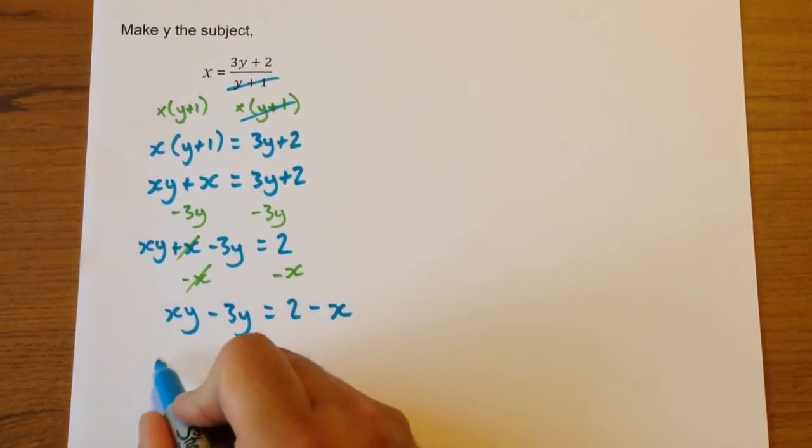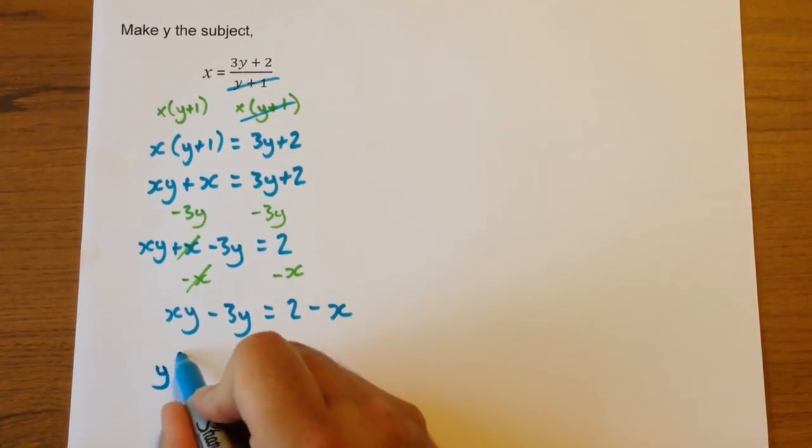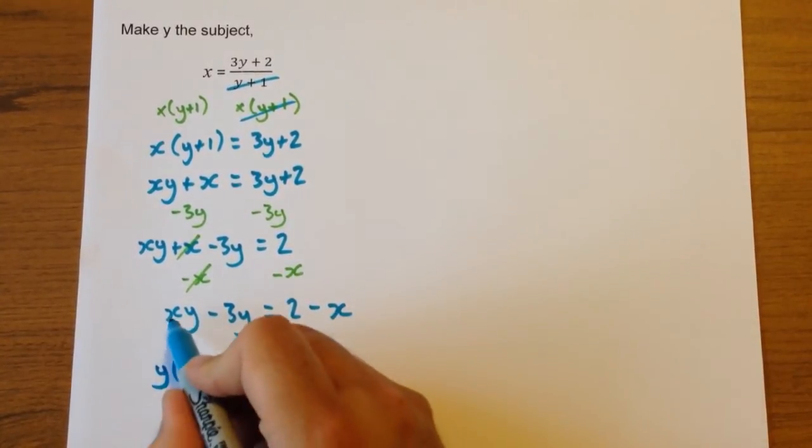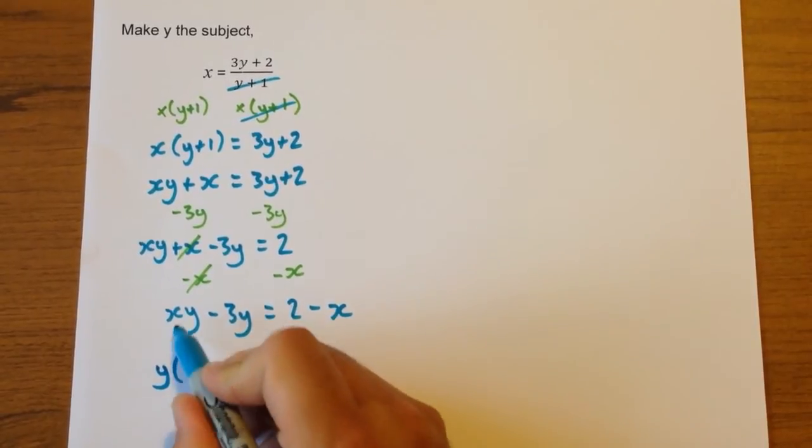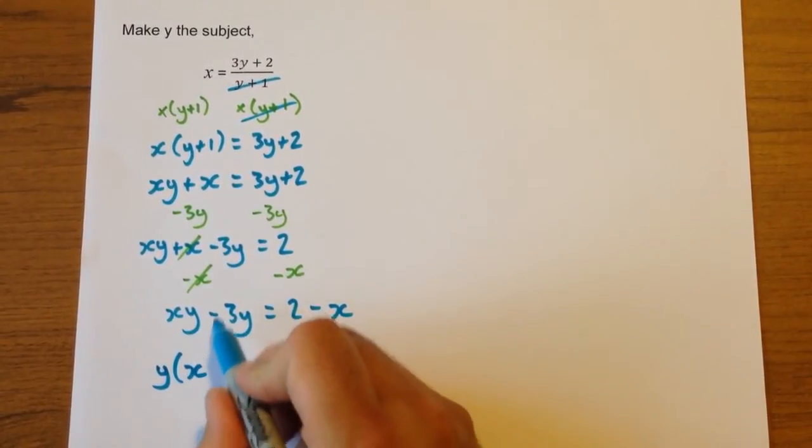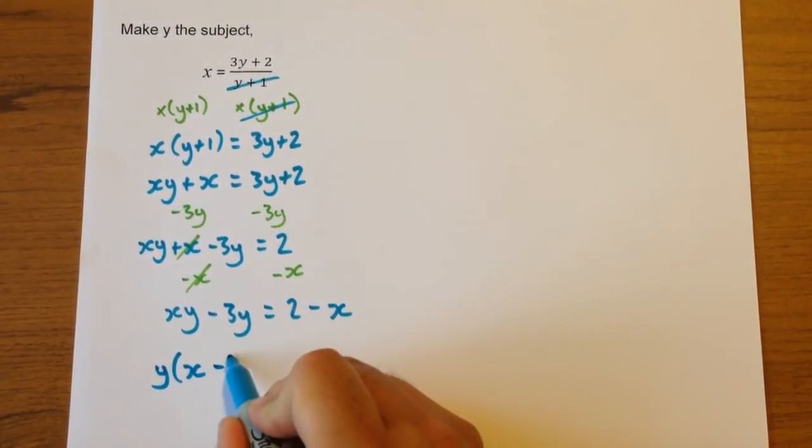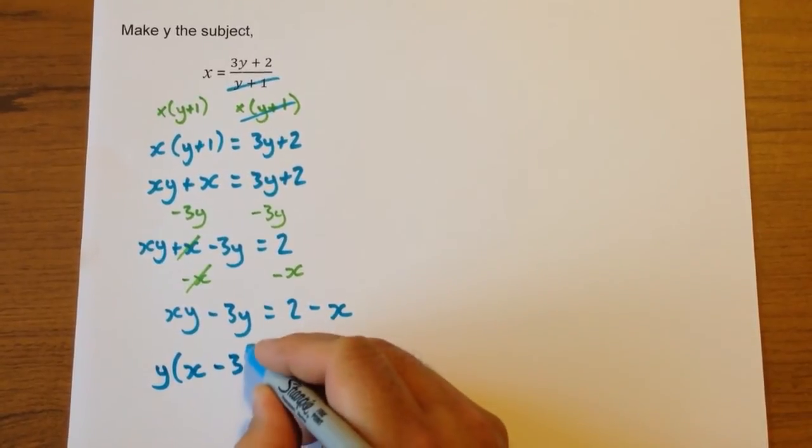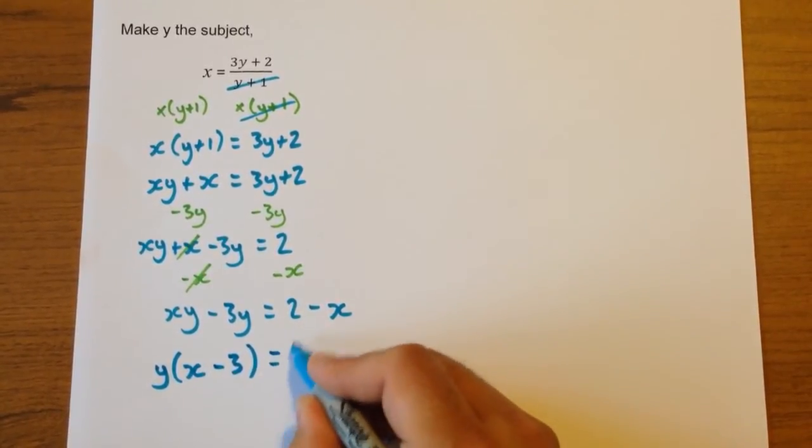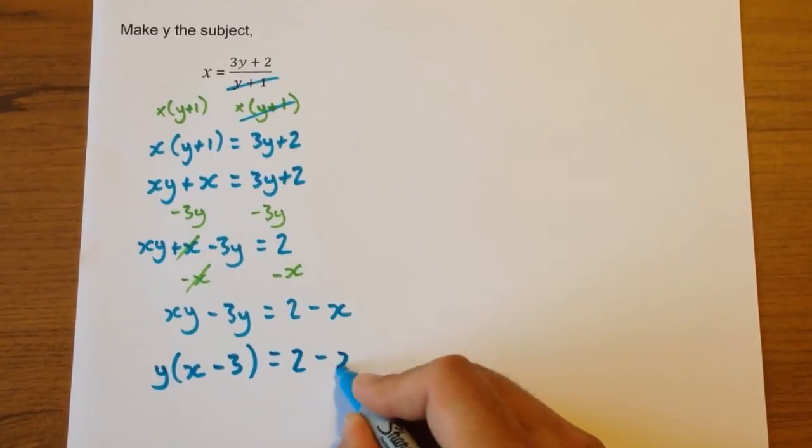So to change this from having two y's to one y, we're going to factorize it, which means put it back into brackets. We'll take the y outside the bracket because that's common to both terms. y multiplied by x gives us xy, and y multiplied by negative 3 gives us -3y. That equals 2 - x.